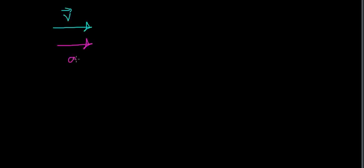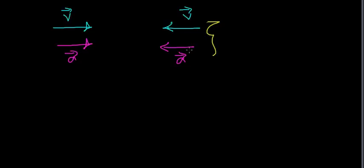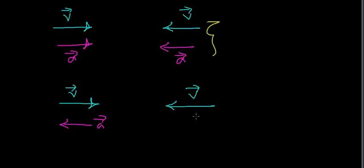To summarize everything: when the velocity and acceleration vectors point in the same direction, the object is going to speed up. This applies whether both are positive or both are negative — even if both point in the negative direction, the object's velocity is still increasing in magnitude. When the velocity vector and the acceleration vector point in opposite directions, the object is going to slow down. This includes positive velocity with negative acceleration, or negative velocity with positive acceleration. The key is whether the vectors point in the same or opposite directions.